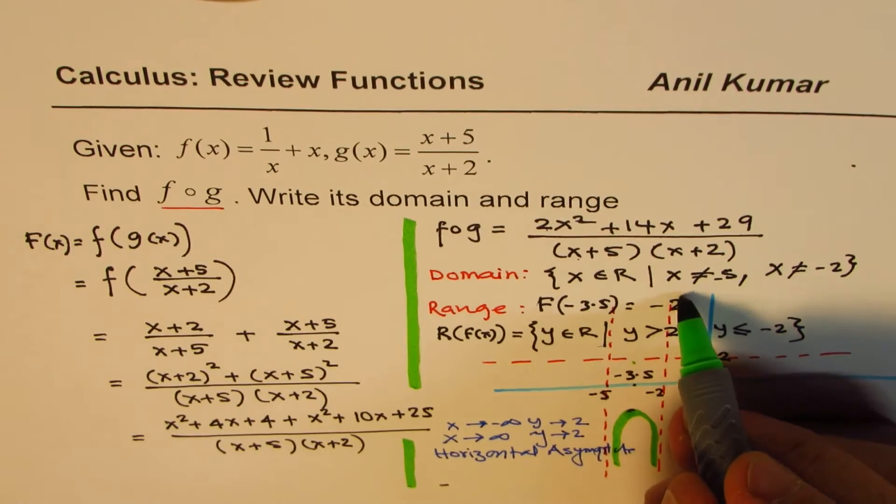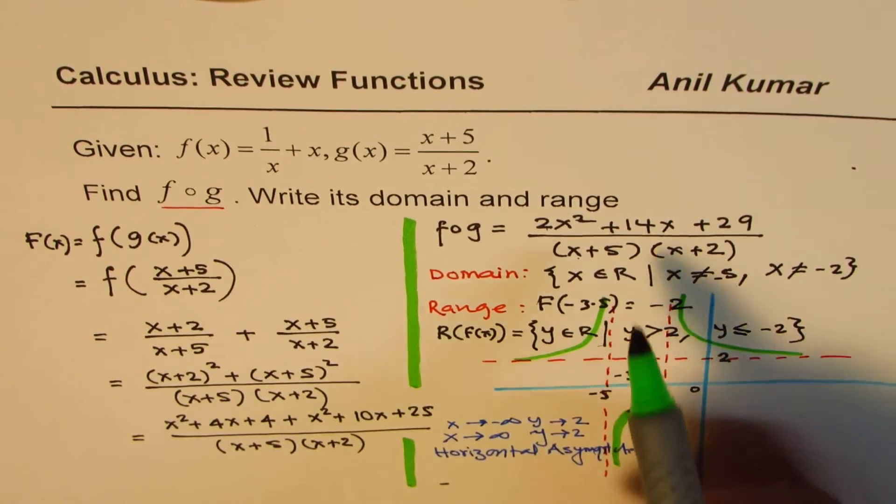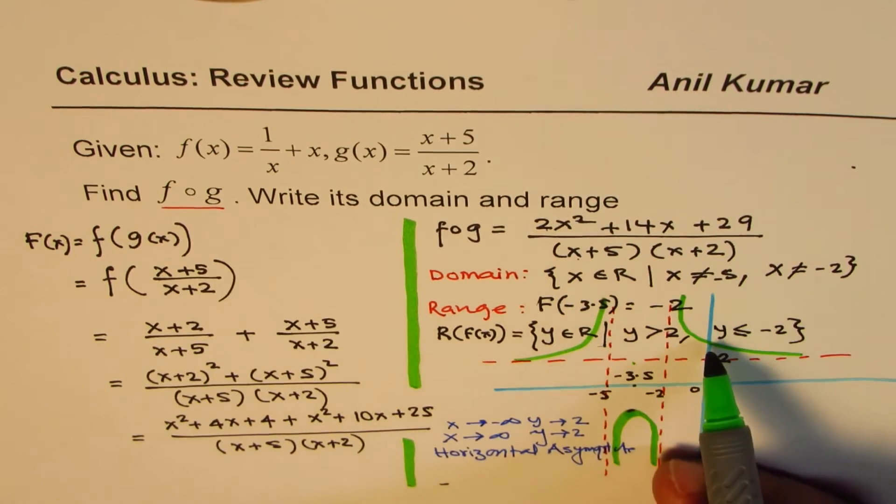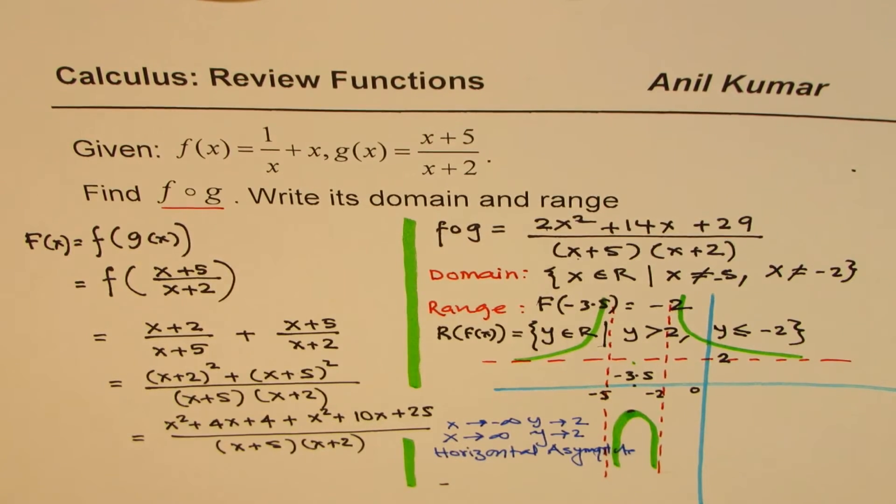Just to give you an idea, this graph will be kind of like this. So we get these values. If I place x equals to 0, you can calculate the y-intercept. And similarly, some more points will help you.